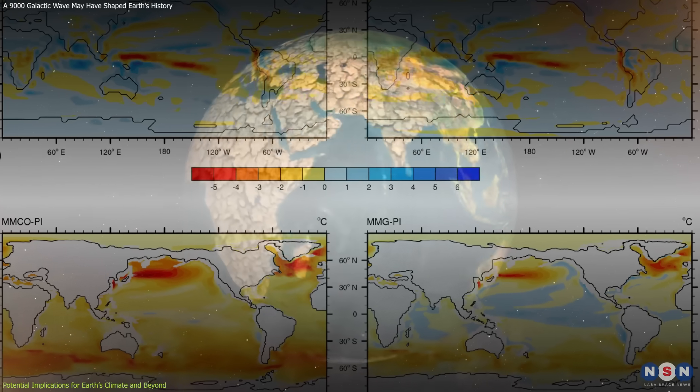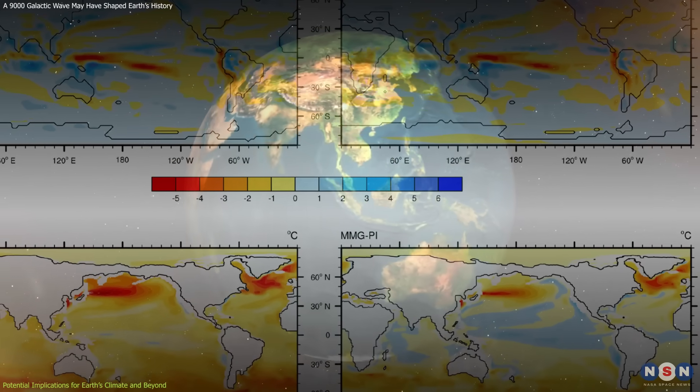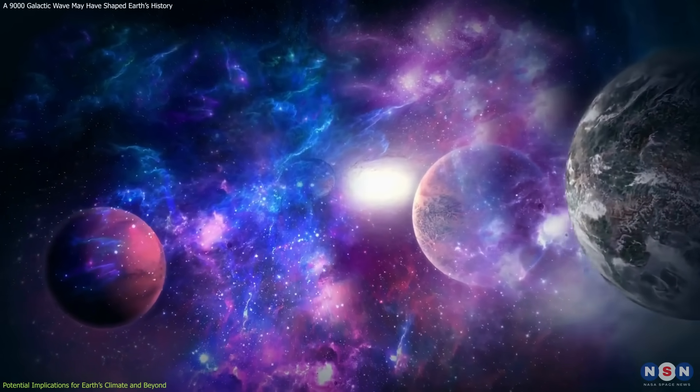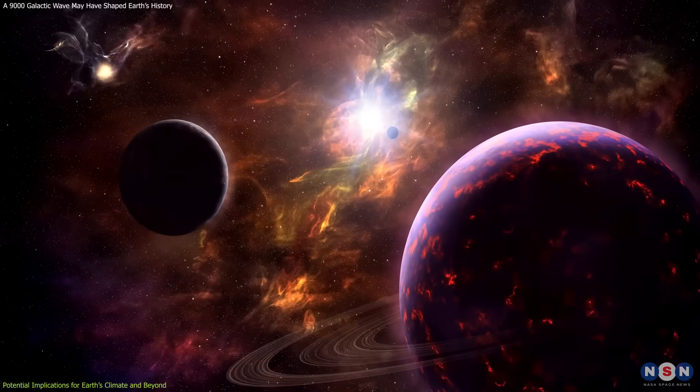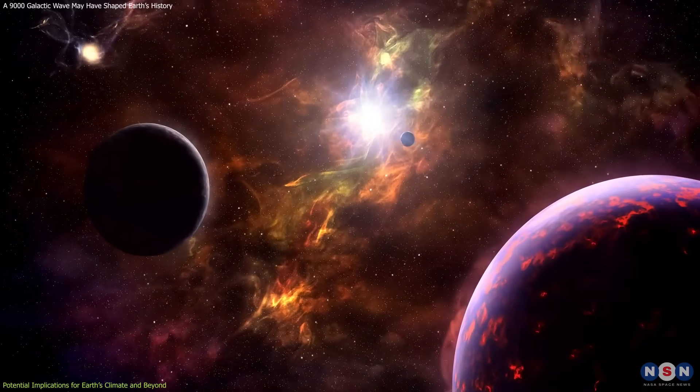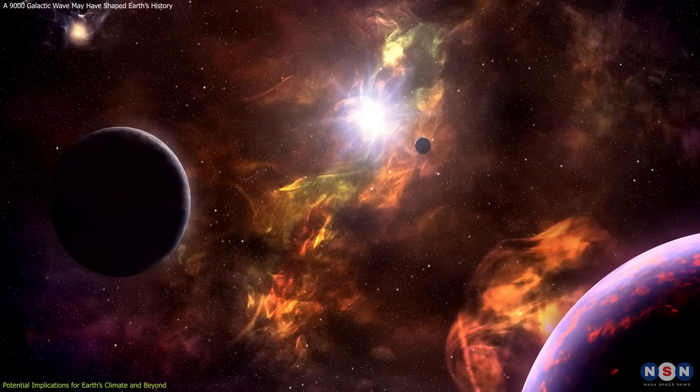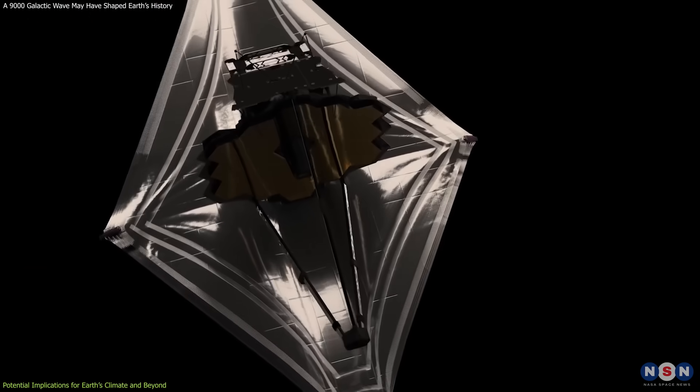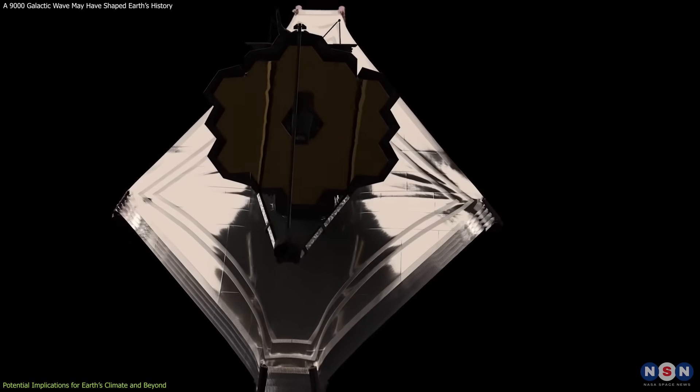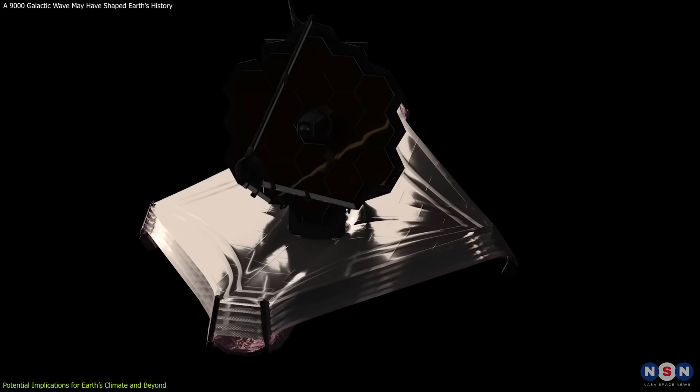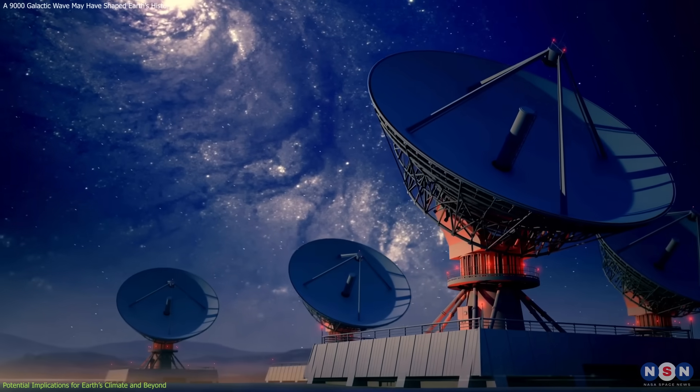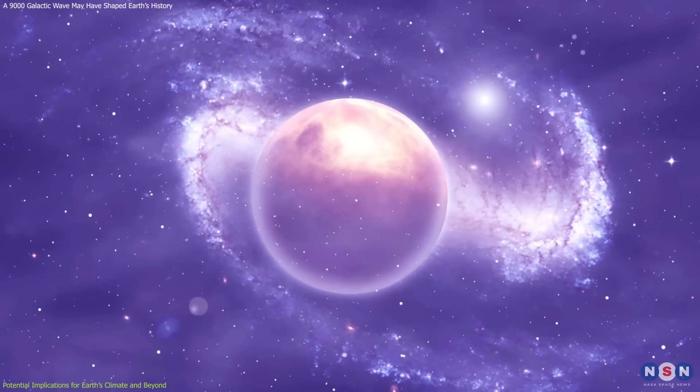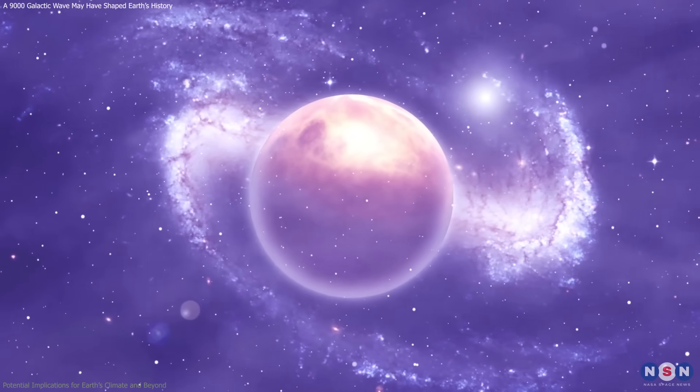The implications of this research extend beyond historical climate change. If interstellar dust influxes can influence planetary climates, then similar processes could be relevant when studying exoplanetary atmospheres and the habitability of distant worlds. While current technology may not yet be sensitive enough to fully analyze these effects, future advancements in space observation and isotope detection could reveal more about how interstellar conditions shape planetary environments.